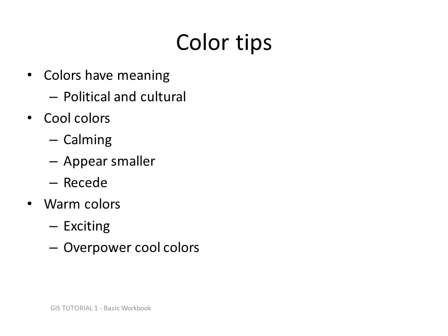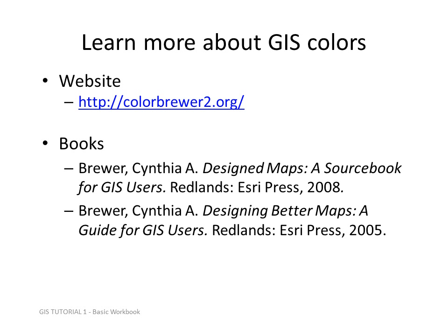Cool colors might be calming, they may appear smaller on the map and tend to recede, while warm colors are more exciting and tend to overpower cool colors. For more information about GIS colors, I recommend the Color Brewer 2 website. This is a great tool to make your own color ramps for thematic mapping, and you'll find the link under web links in the course.